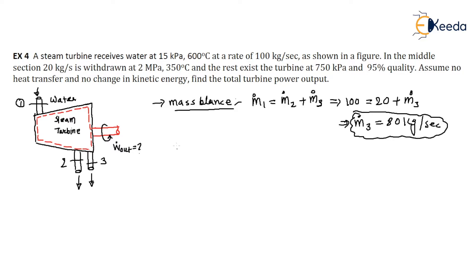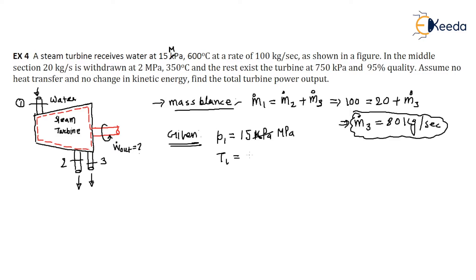Now, what is given? p1 is given — not 15 kilopascal, I think it is 15 megapascal. Why? Because the withdrawal pressure is 2 megapascal, which is higher than 15 kilopascal, so the pressure must reduce — therefore it is 15 megapascal. And the temperature T1 is given as 600 degrees centigrade. This is the first inlet condition.